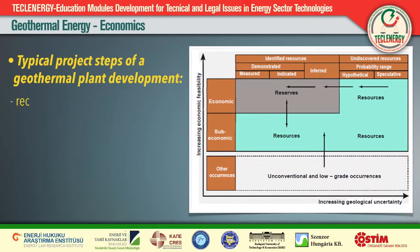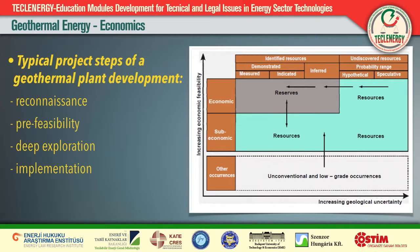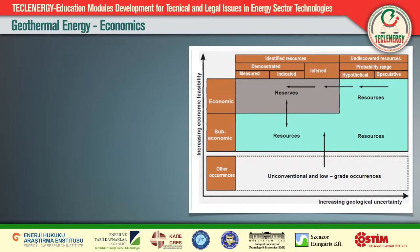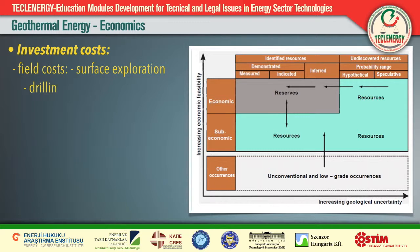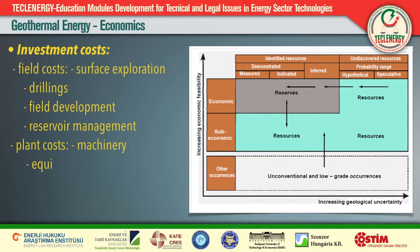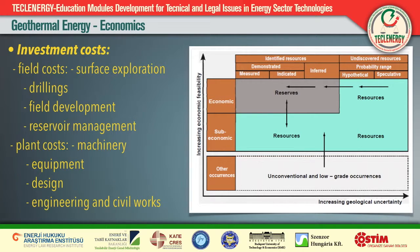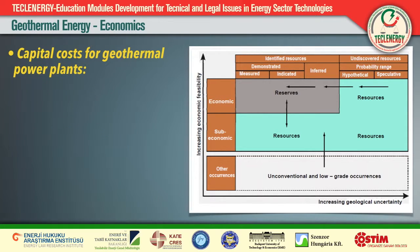The modified McKelvey diagram shows the classification of geothermal energy sources on the basis of their accessibility. Typical project steps of a geothermal plant development are: reconnaissance, pre-feasibility, deep exploration, implementation, and operation and maintenance. Geothermal projects typically have high upfront investment costs due to the need to drill wells and construct power plants, but relatively low operational costs. The cost of geothermal projects can be divided into two main categories: field costs — including surface exploration, drillings, field development, and reservoir management — and plant costs — including machinery, equipment, design engineering, and civil works. Investment costs are composed of exploration and resource confirmation, drilling of production and injection wells, surface facilities and infrastructure, and the power plant itself.